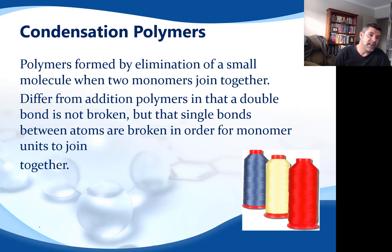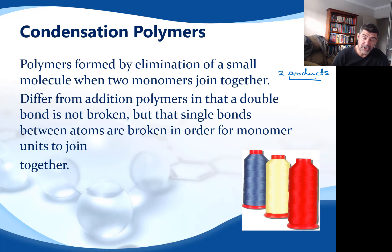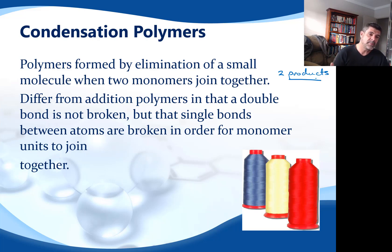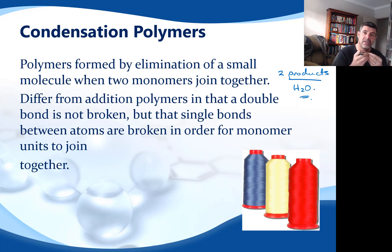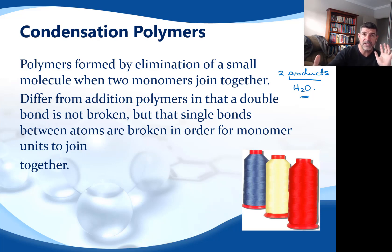Condensation polymers are formed by the elimination of a small molecule, so there are two products — and that is probably the biggest difference between addition polymerisation and the condensation process. In addition polymerisation you get your polymer, which can vary in length but is still the same polymer. Whereas with condensation polymers you get your polymer but also smaller molecules. Often that smaller molecule is water, released for each two monomers joined together — so three monomers joined gives two water molecules, and so on.